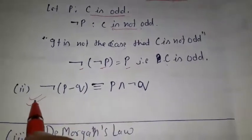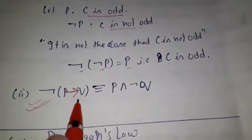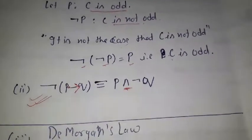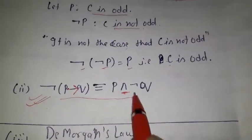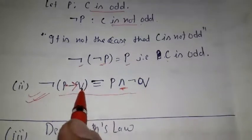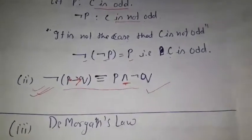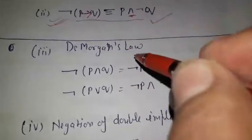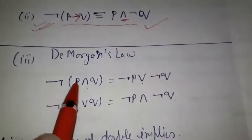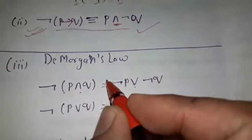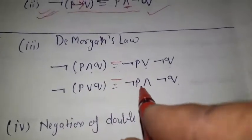The second important property of negation: if we take the negation of an implication, then it is equivalent to a conjunction. Not (P implies Q) is equivalent to P and not Q. This is a very important property. The third important law of negation is De Morgan's law: not (P and Q) is equivalent to not P or not Q, and not (P or Q) is equivalent to not P and not Q.